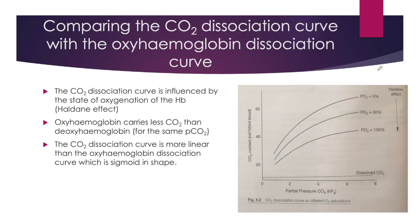We will now look at how the carbon dioxide dissociation curve compares with the oxyhaemoglobin dissociation curve. The CO2 dissociation curve is influenced by the state of oxygenation of the haemoglobin — this is known as the Haldane effect. Oxyhaemoglobin carries less CO2 than deoxyhaemoglobin for the same PCO2, and we can see that demonstrated on this graph here.